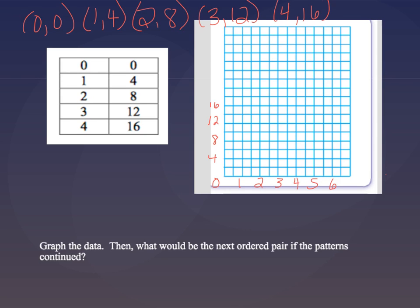Alright, so I have gone ahead and wrote out the coordinate pairs. So I have 0, 0, 1, 4, 2, 8, 3, 12, 4, 16.